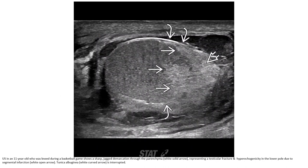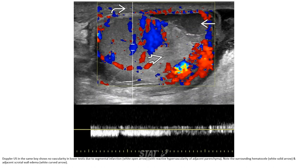Ultrasound in an 11-year-old who was kneed during a basketball game shows a sharp linear defect through the parenchyma representing a testicular fracture, and a hyperechoic area in the lower pole due to segmental infarction. The tunica albuginea is interrupted. Duplex ultrasound of the same patient shows no vascularity in the lower testis due to segmental infarction. Note the surrounding hematocele and adjacent scrotal wall edema.